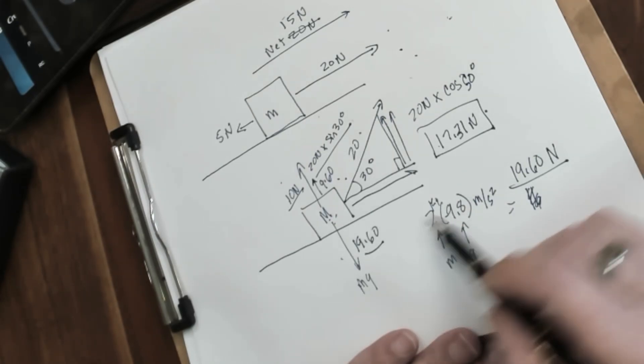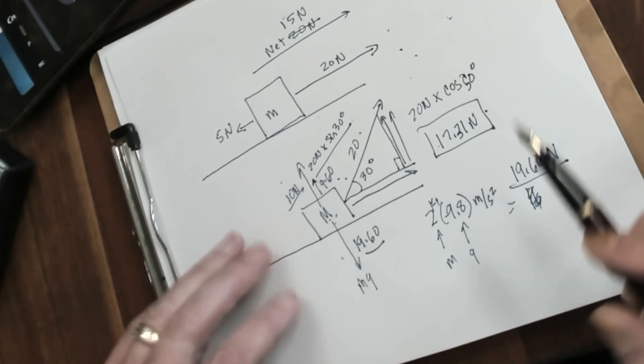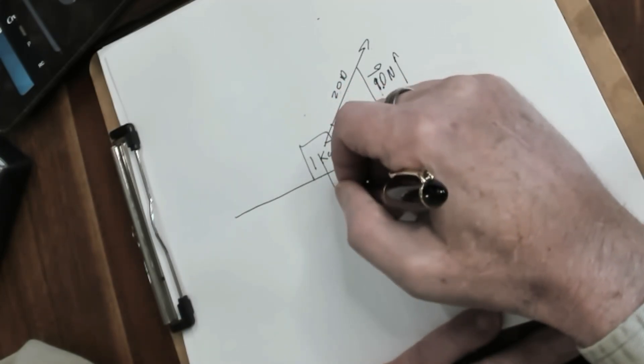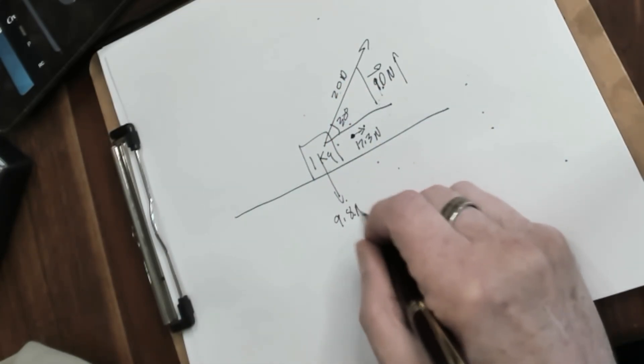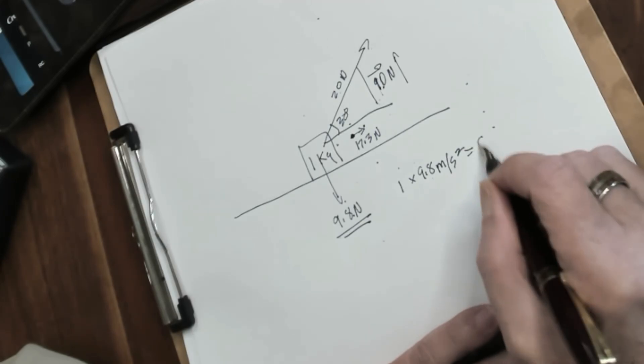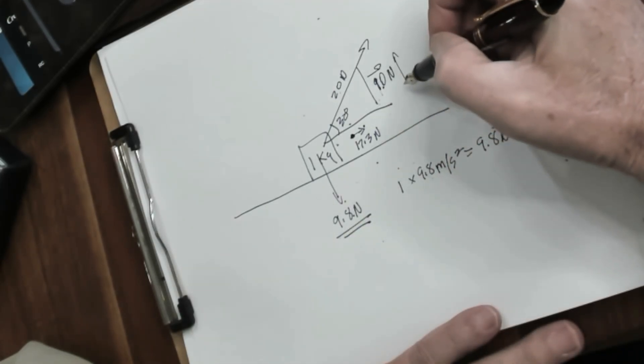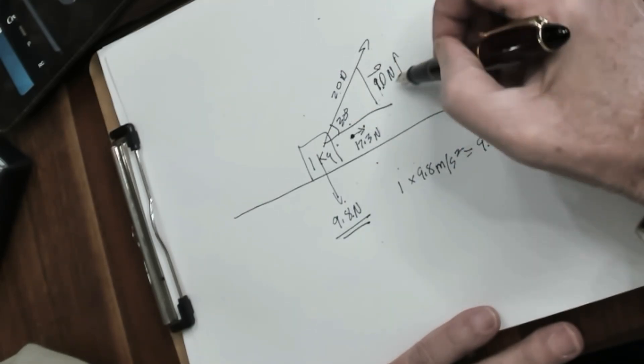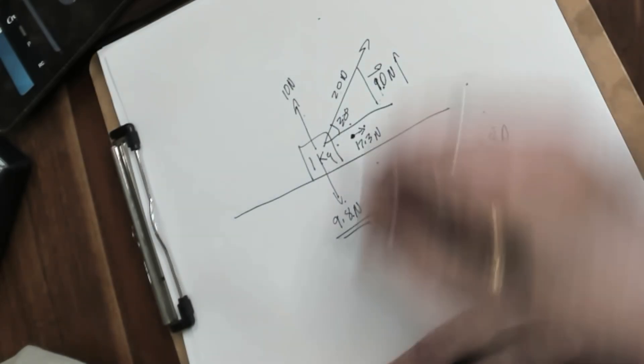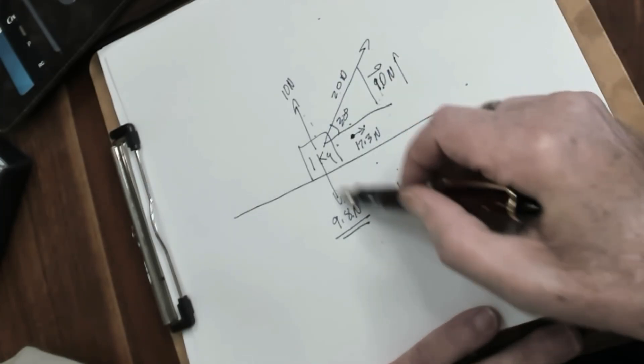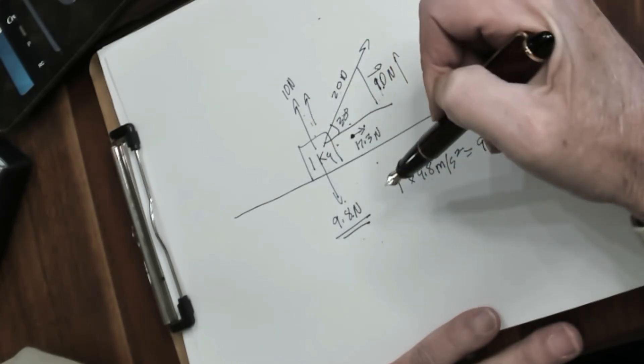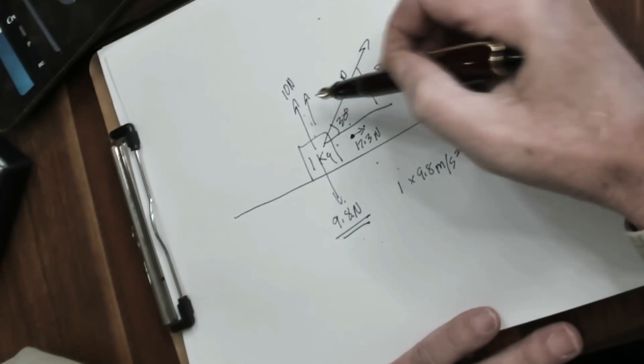What if instead of being a 2 kilogram mass, our mass was only 1 kilogram? Let's go ahead and have a look and see what would happen with that. Okay, so now we have a 1 kilogram mass here. What is the downward force of gravity on a 1 kilogram mass? It's 9.8 newtons. That's 1 times 9.8 meters per second squared equals 9.8 newtons. Now, the upward force from our 20 newton force directed at a 30 degree angle is still 10 newtons. So now we're coming up 10 newtons. Notice that the force going up is 10 newtons, but the force pulling it back down is 9.8 newtons. As a result, the net force or the net movement will be in that direction, and the box will come off the table.